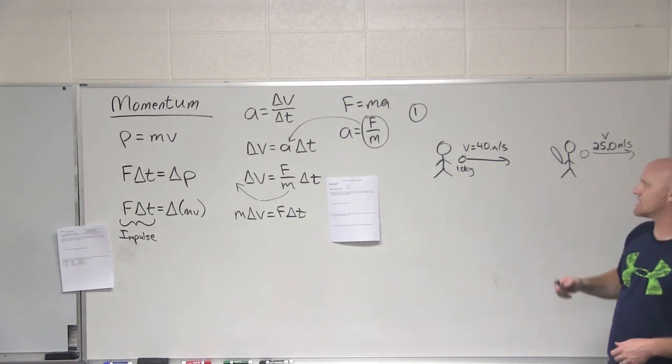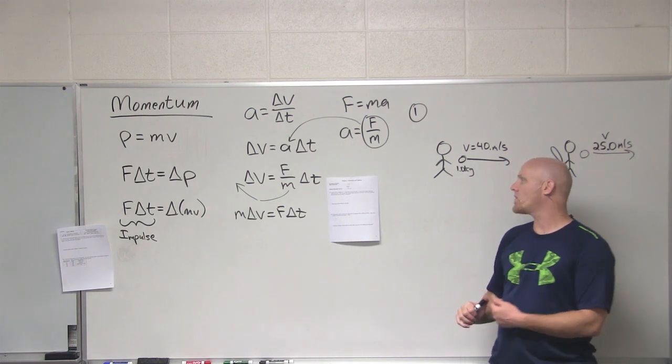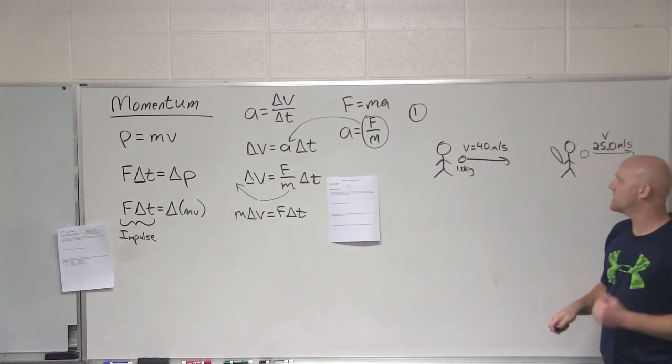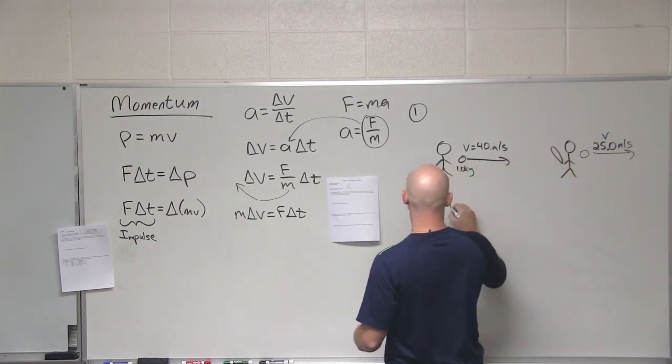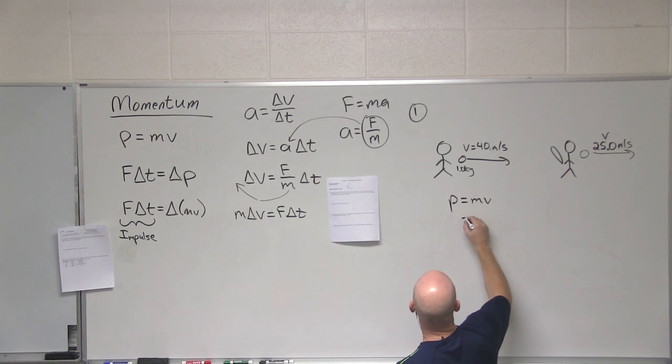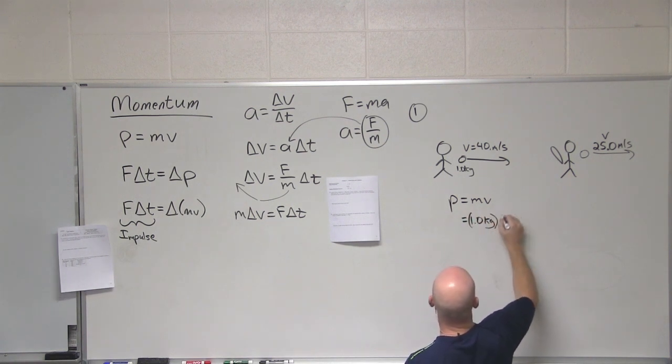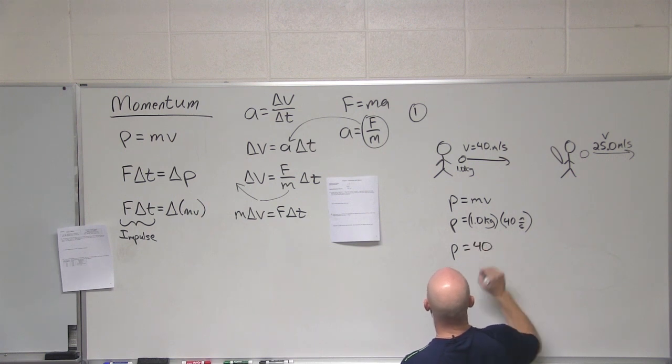So you got a couple questions you're supposed to answer. What is the momentum of the ball both before and after it is fouled off? So first of all, what's the momentum of the ball beforehand? Yeah, so in this case, we've got a mass of one kilogram, we've got a velocity of 40 meters per second, and so that gets you a momentum of 40. What's the SI unit for momentum?